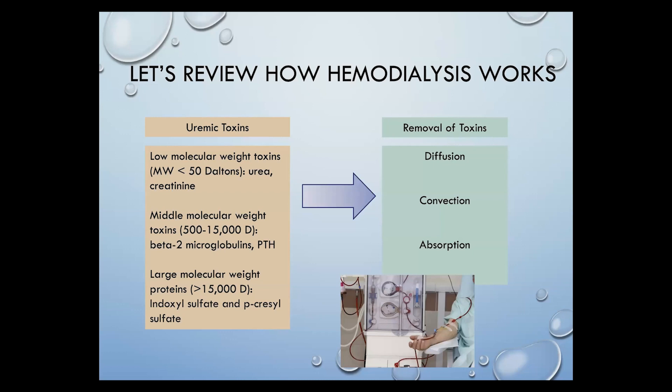In terms of middle molecular weight toxins, significance has been less clear, but larger and protein-bound toxins have been shown to contribute to cardiovascular disease in end-stage renal disease patients. Toxin solutes are removed by hemodialysis through three mechanisms: diffusion, which is going down the concentration gradient and is better for smaller molecules; convection or solvent drag, which uses frictional force between water and solute for removal and is more effective for larger solutes; and finally, absorption of solutes by the dialysis membrane.